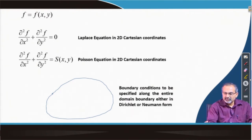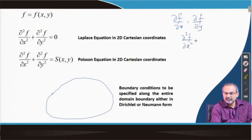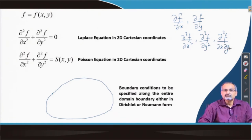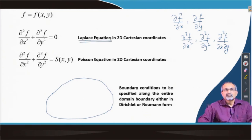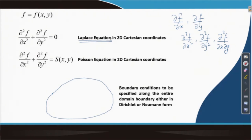For example, we could have first derivatives of f defined as del f del x and del f del y, and we could have second derivatives of f with respect to x, with respect to y, or also mixed derivatives with respect to both x and y.